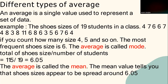What most people think of as the average is the value you get when you add up all the shoe sizes and divide your answer by the number of students. For example, the total of shoe size — if you total all the values, you get 115, divided by the number of students, which is 19. So the average you get is 6.05 to two decimal places. This average is called the mean.